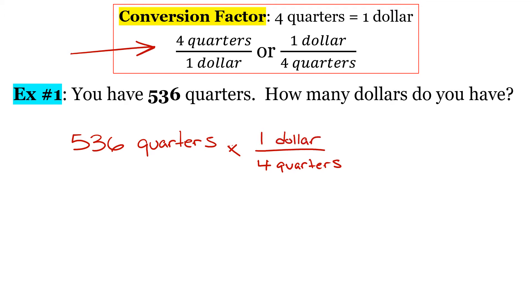Now, why did I write it like that? Couldn't you have just taken 536 divided by four? Well, yes, that would get you the same answer. But the reason we write it out like this is because over the next couple of lessons, when we do conversions, it's better to write our conversion factor as a fraction — especially when we're doing multiple conversions in a row — because it allows us to cancel our units and will get us the right answer every single time.